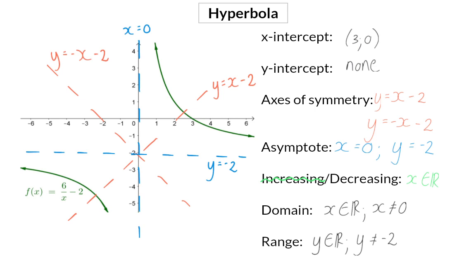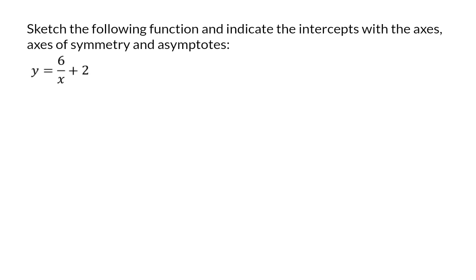Next, let's go and sketch a hyperbola. Sketch the following function and indicate the intercepts with the axes, axes of symmetry, and asymptotes. I always start off thinking about a rough sketch for this graph, and then I start with the asymptotes. In this case, there's a plus 2, which means we have a horizontal asymptote at y is equal to 2.